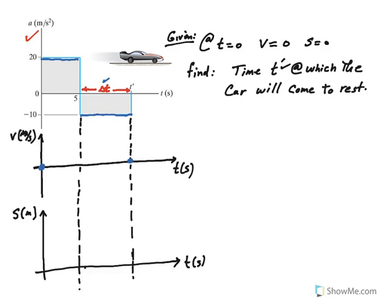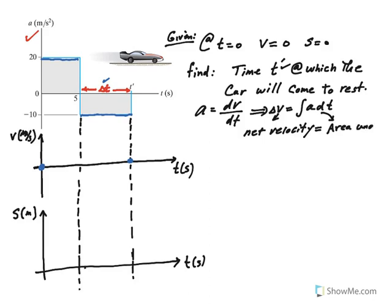How do we go about plotting the velocity diagram and position diagram and calculating the time t prime? It's very simple. We know that acceleration is the rate of change of velocity, and this eventually means that v is the integral of acceleration. This is really v2 minus v1 or delta v.